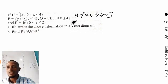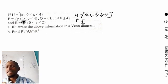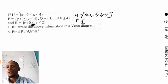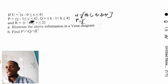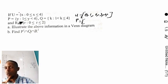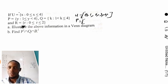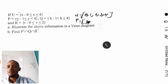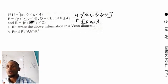Now let's find the elements of P. Set P has elements y where 1 ≤ y < 4. The number 4 is NOT included here because there is no 'equal to' on that side. The number 1 IS included because of the 'less than or equal to' on that side. So we start from 1, then 2, then 3 — and we stop at 3. The elements of P are: 1, 2, 3.